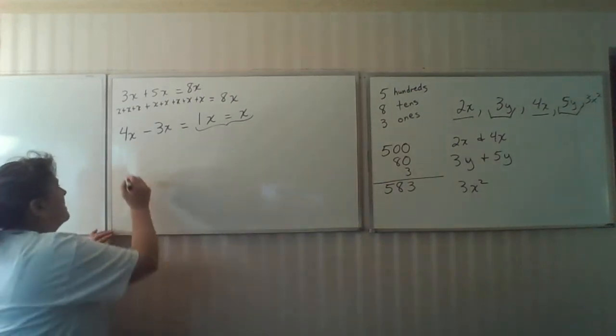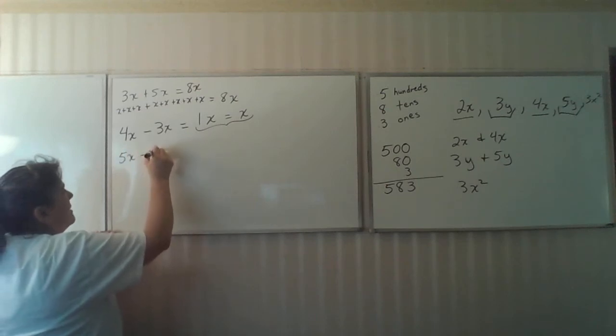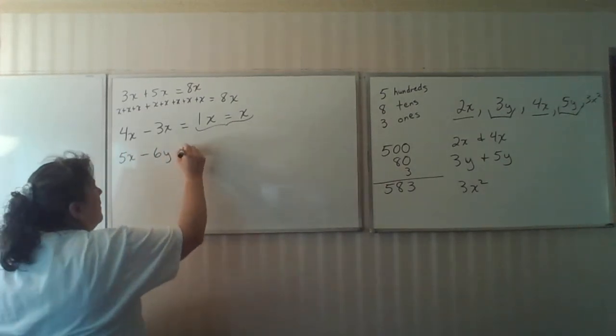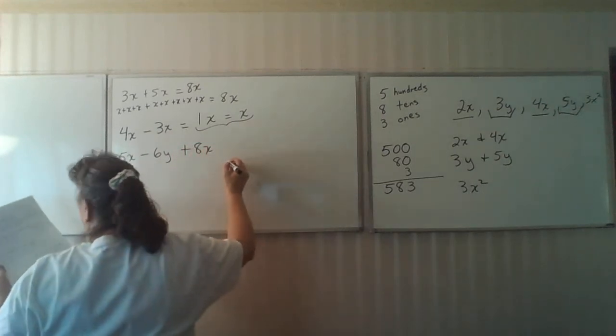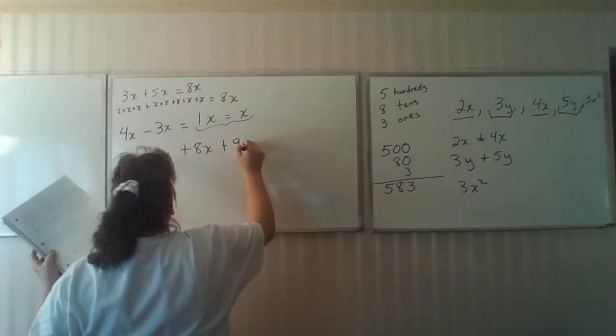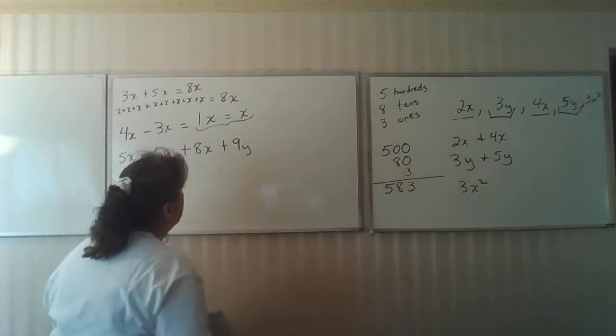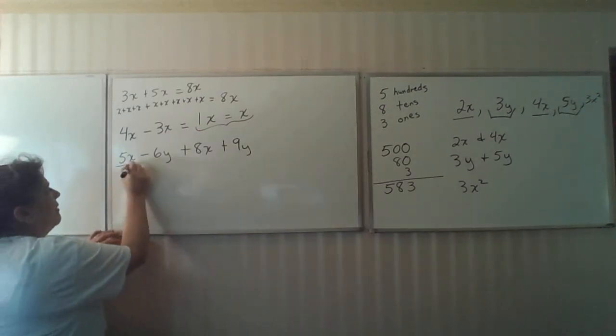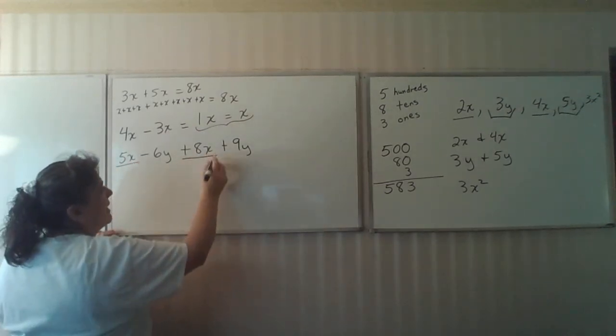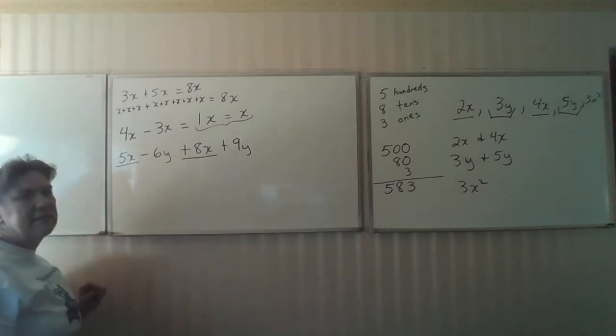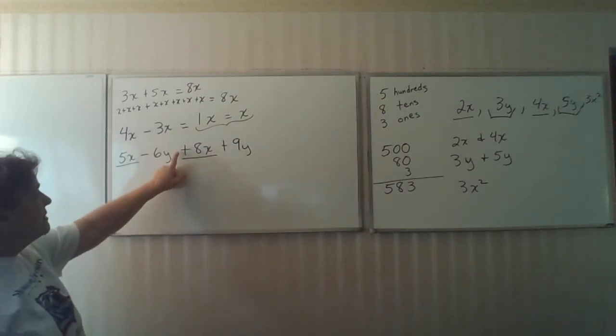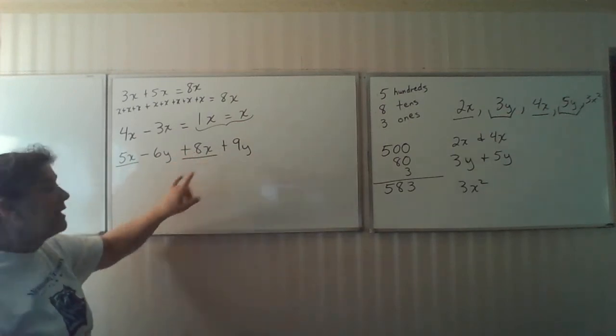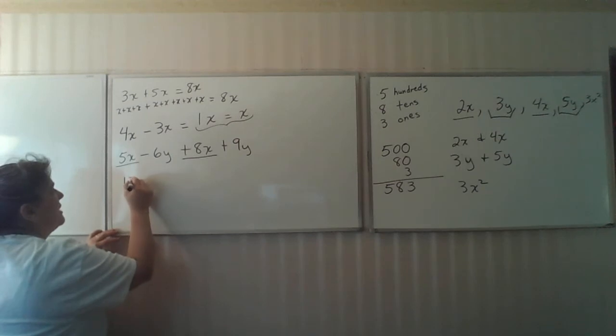Let's get more complex. 5x minus 6y plus 8x plus 9y. Let's look at combining those like terms. Identify first. 5x plus 8x, and notice I put that operation symbol with it, because this has to stay with this. 5x plus 8x is equal to 13x.